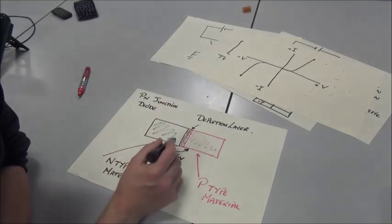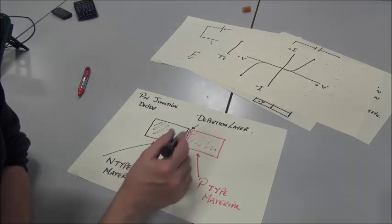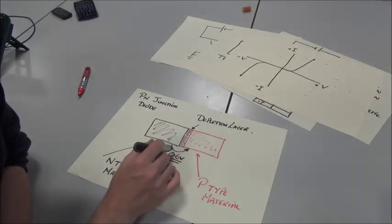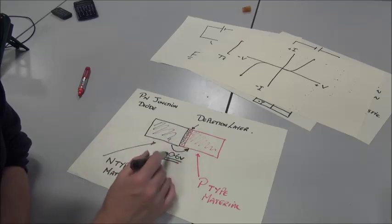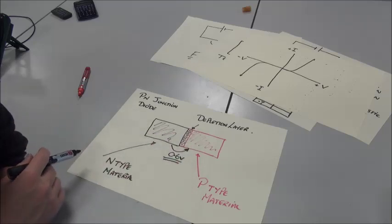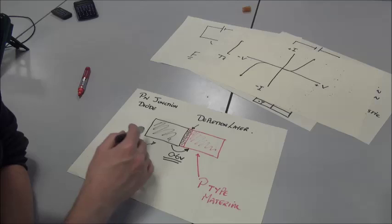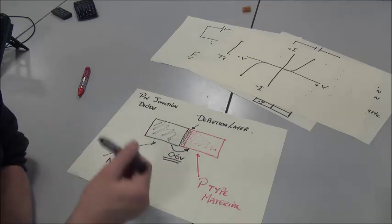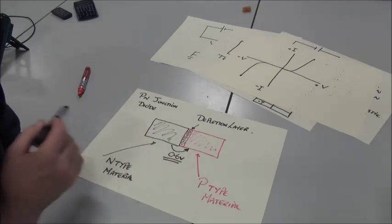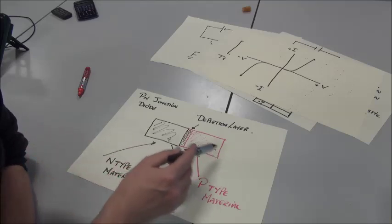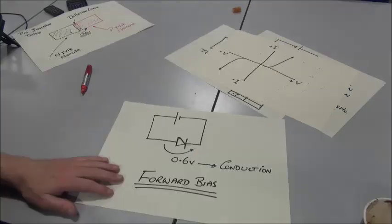What effectively happens is we build up a potential difference between both sides of around about 0.6 volts. And in order to get the diode to conduct, we have to apply a potential of 0.6 volts or greater to get conduction through the diode.